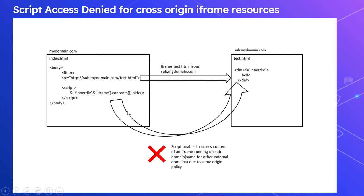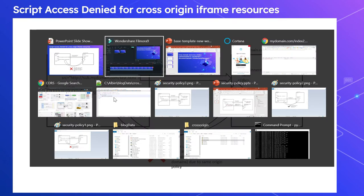We have seen the definition of same origin. Here the hostname is different, but the protocol and port are the same. Still, the domain name is different — even though it's a subdomain, it is considered a different origin. So the script's access to the iframe content is restricted. Let me show that with a sample.